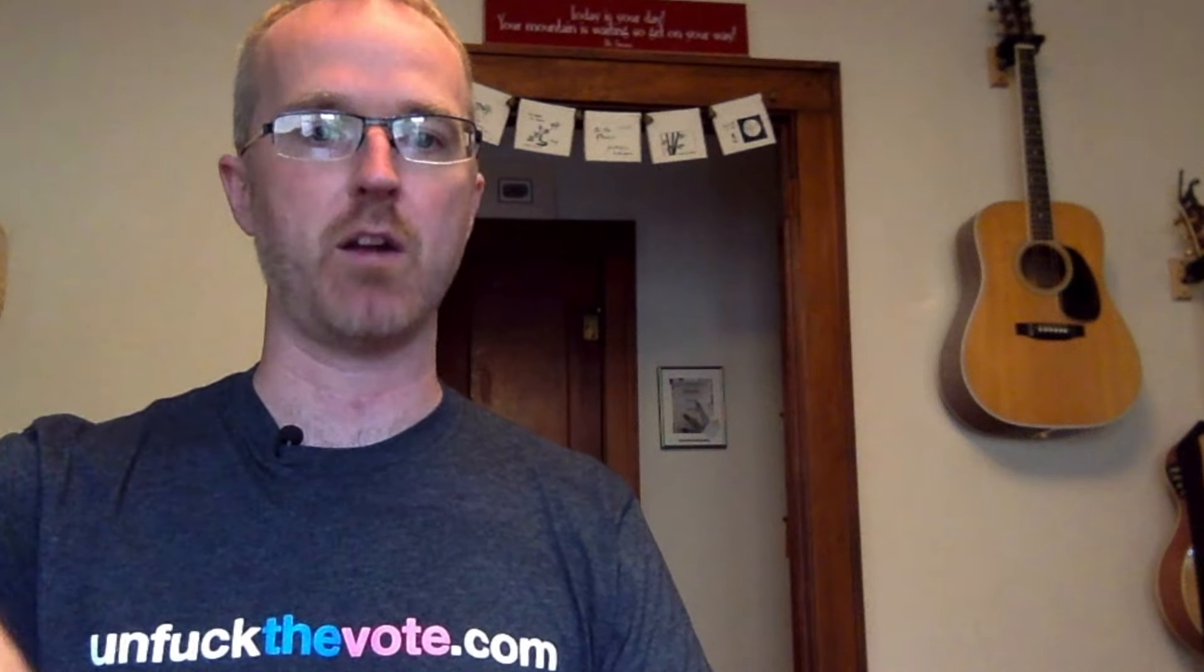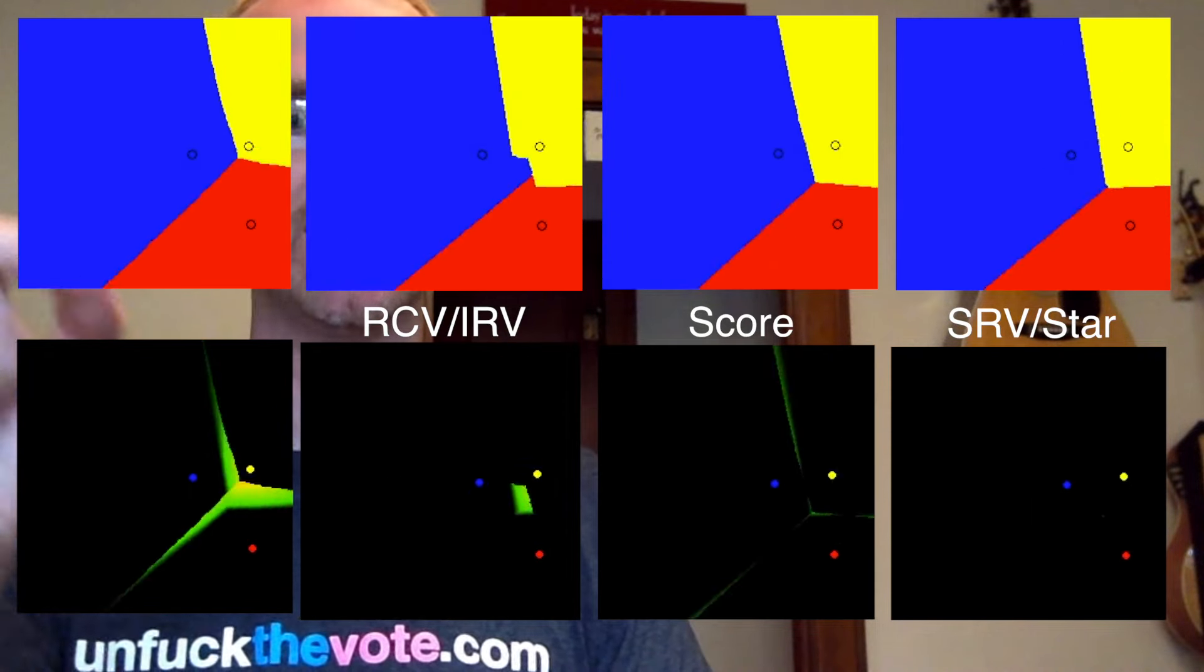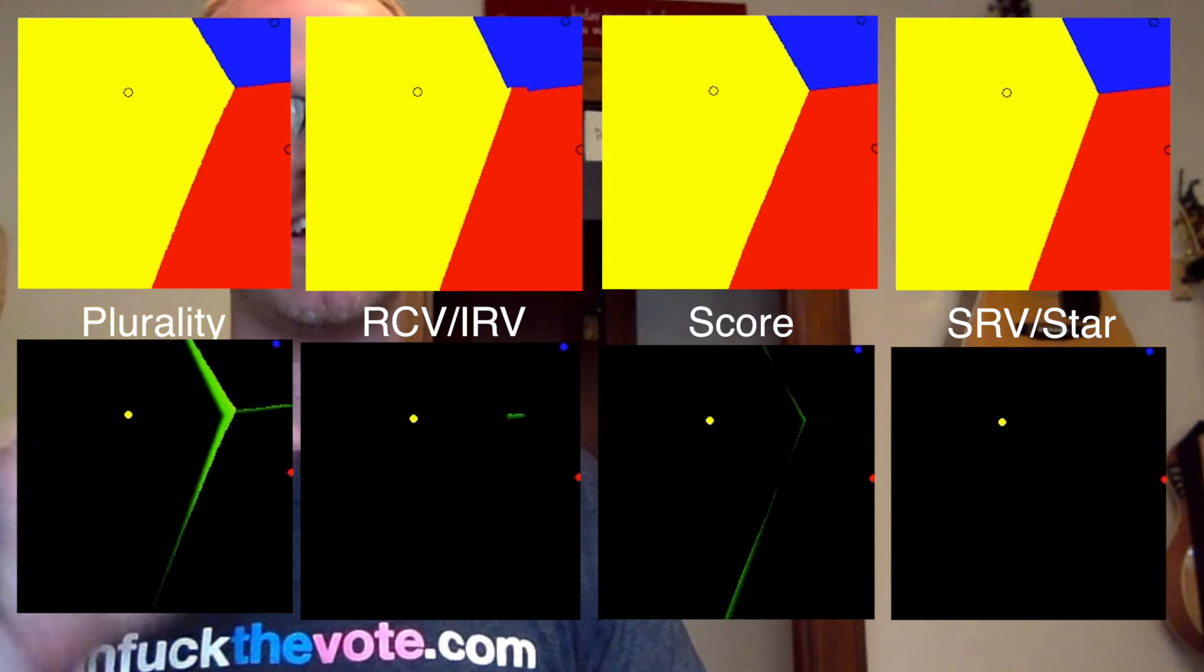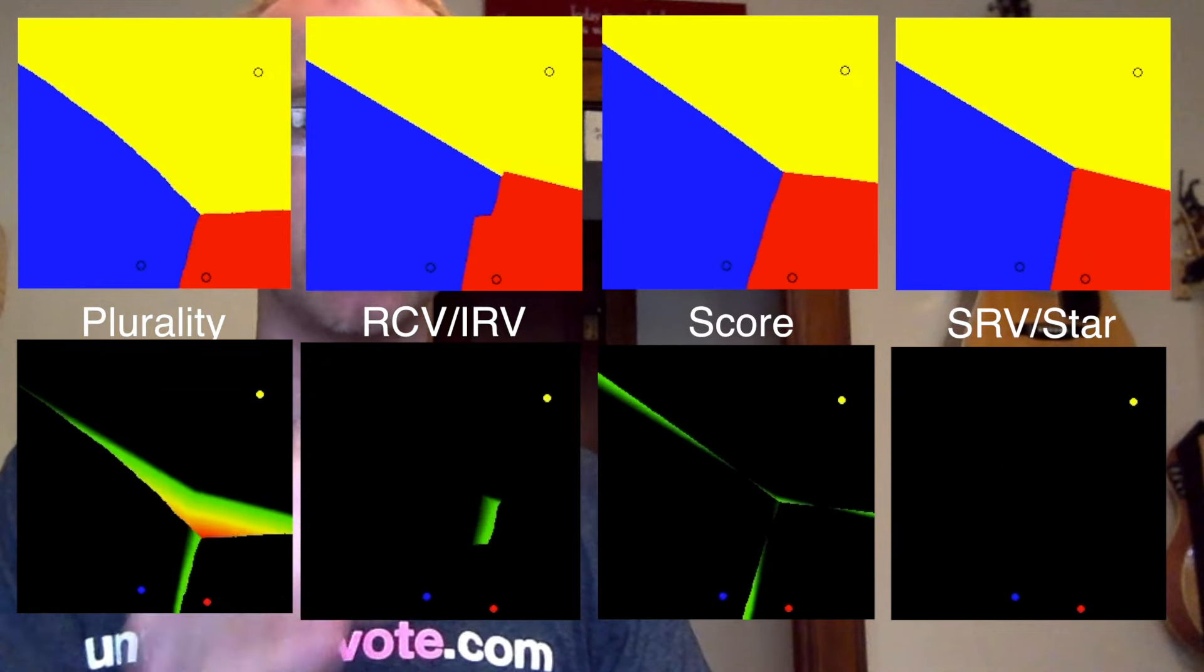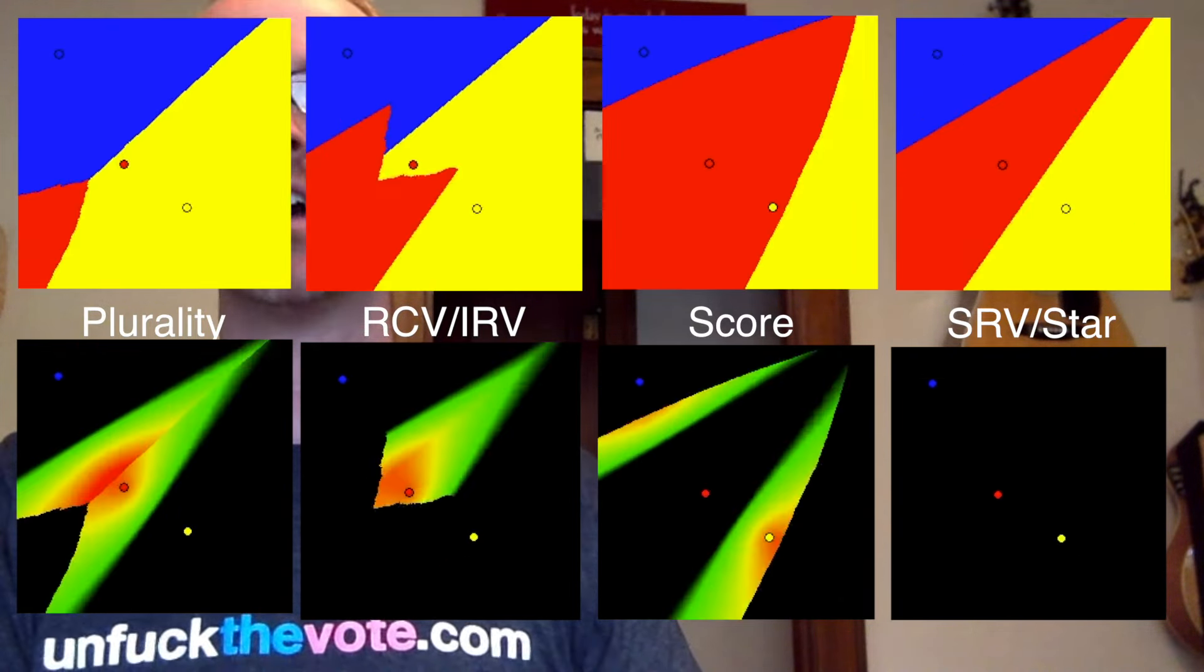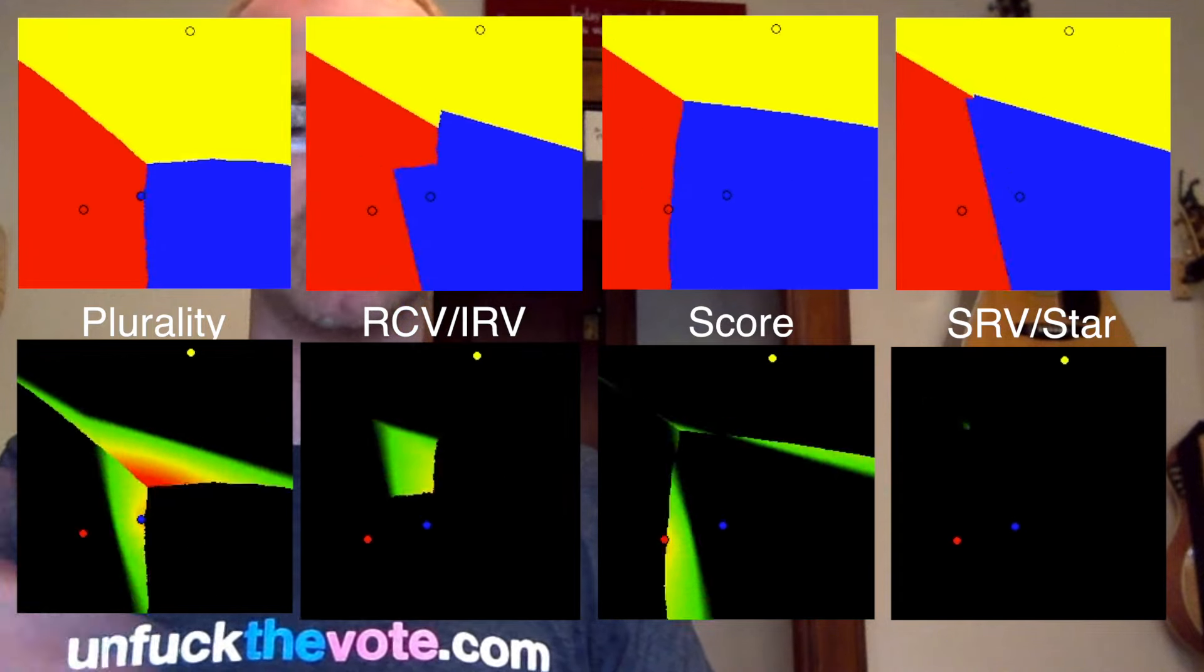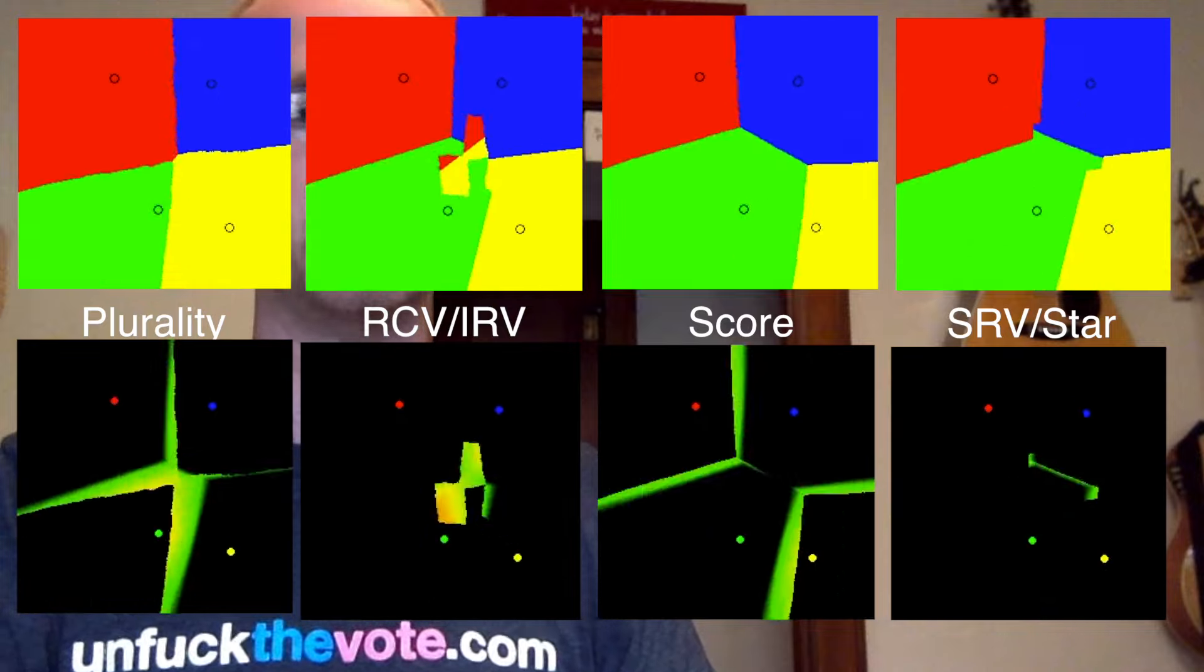And now we'll look at these images again, highlighting the areas that are different from the ideal model, so we can see really clearly where they fail. The intensity of the different image is based on how much the voting system got it wrong. So green means that it kind of picked a candidate that's pretty close to the right candidate. Red means it just picked when there was a much better candidate, much closer to the center of public opinion, that the system missed.